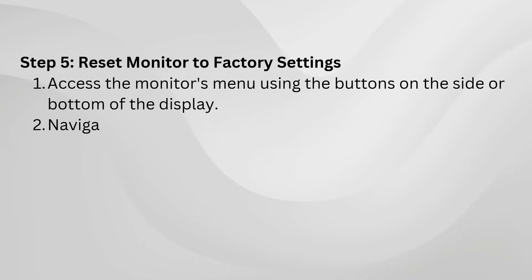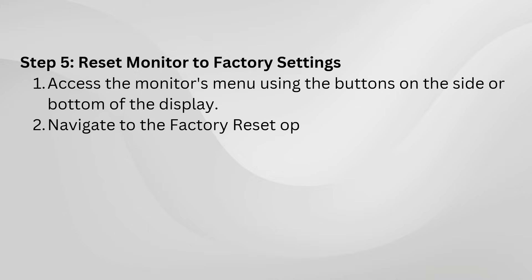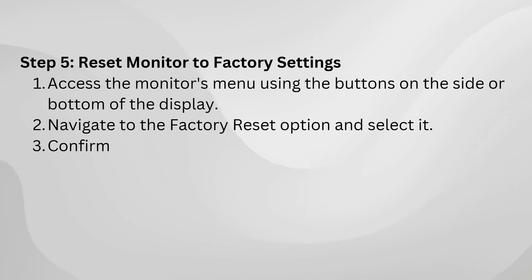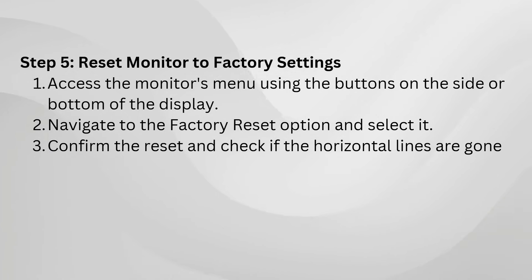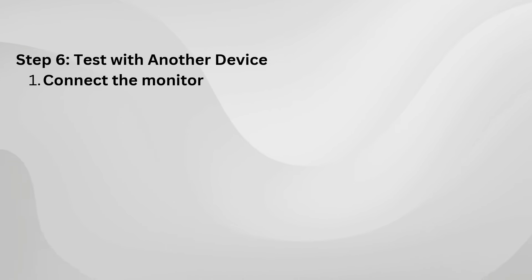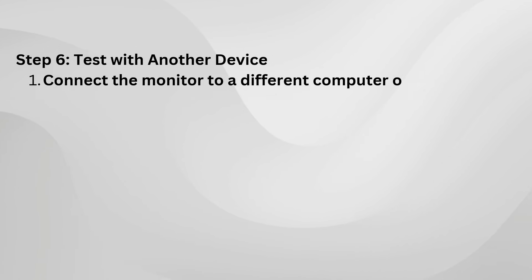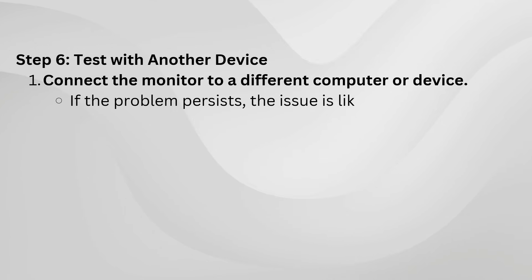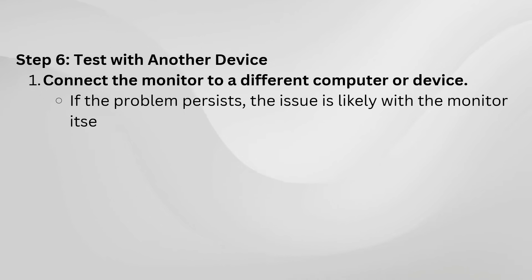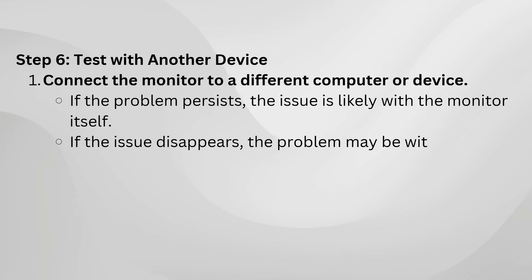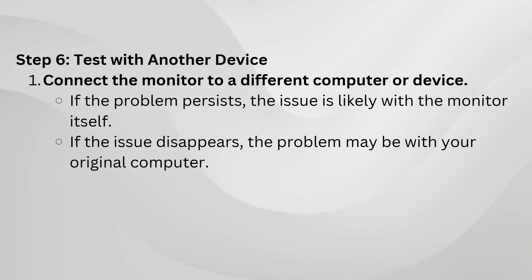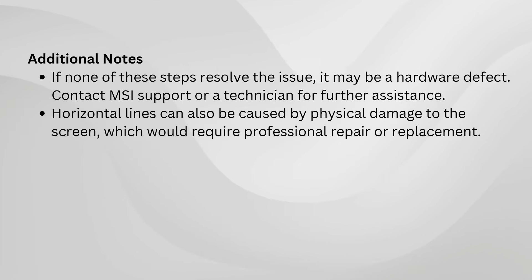If none of these steps work, it might be time to reset your monitor to its factory settings. You can usually find this option in the monitor's menu, accessible through buttons on the side or bottom of the screen. Resetting the monitor can often clear out any unusual settings or issues that are causing the display problems.